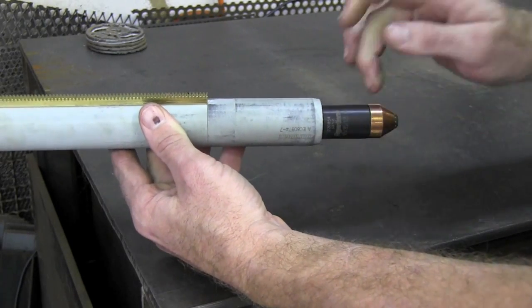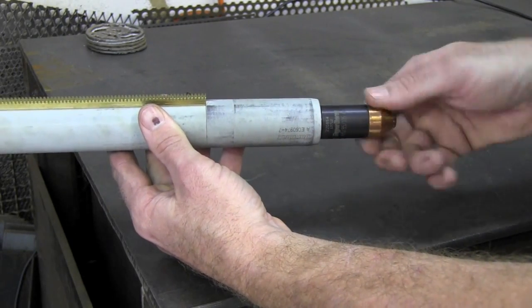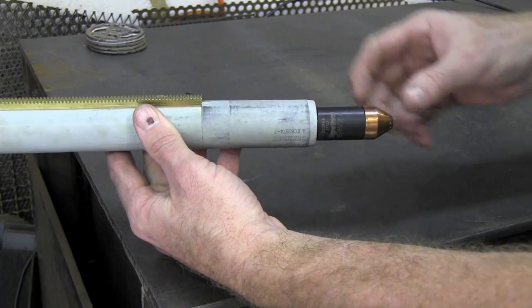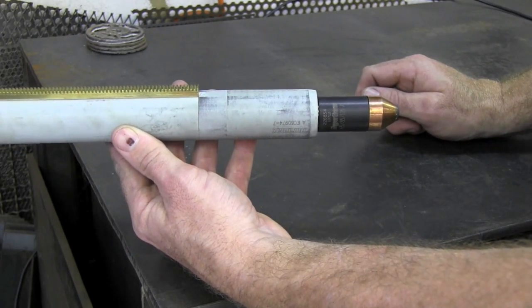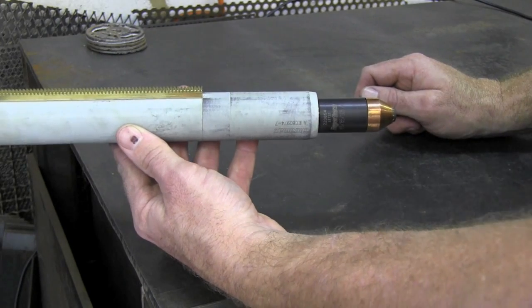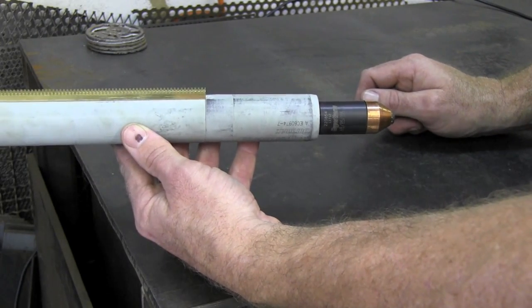I made the mistake and actually screwed this piece on first and then built everything in that and it didn't allow this to screw down right and it started bringing up error codes. So lesson learned there. Now we'll install the torch into the machine.